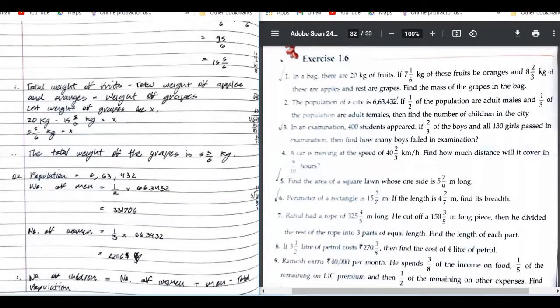Number two: the population of a city is 663,432. If half of the population are adult males and one-third of the population are adult females, then find the number of children.